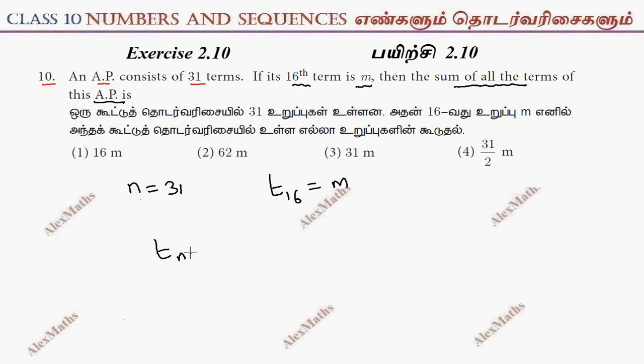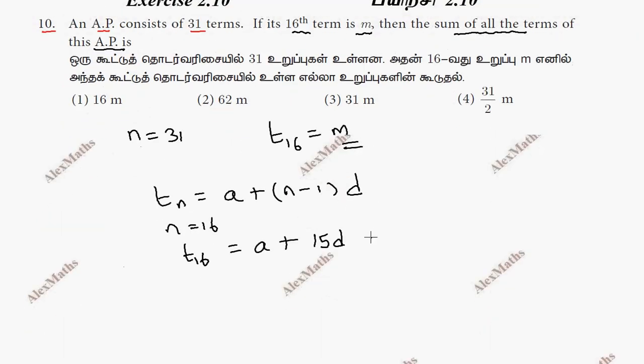The tn formula is a plus n minus 1 into d. For the 16th term, substitute: t16 equals a plus 16 minus 1 times d, which is a plus 15d. Since t16 value is m, we have m equals a plus 15d. This is the first equation. Now we have to write S31, the sum of all the terms of the AP.